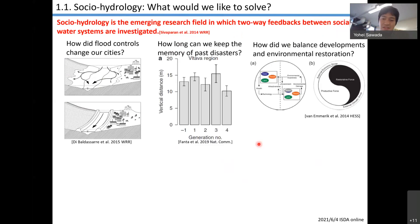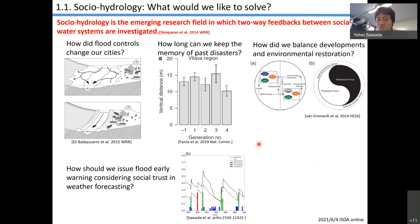And this is our own study: How should we issue the flood warning considering social collective trust in weather forecasting? People in some cases trust the weather forecasting, but people in some cases don't. So how can we manage to optimize our warning in those kinds of social complex systems?